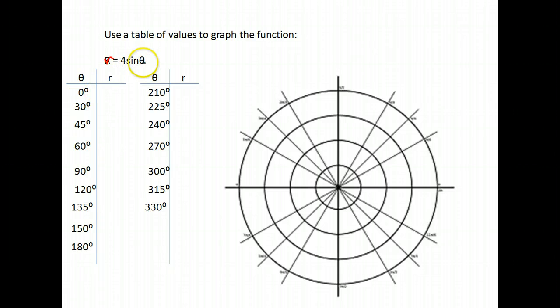Again, you just put in your values. So sine of 0 is 0 times 4 is 0. The sine of 30 is 0.5 times 4 is 2.